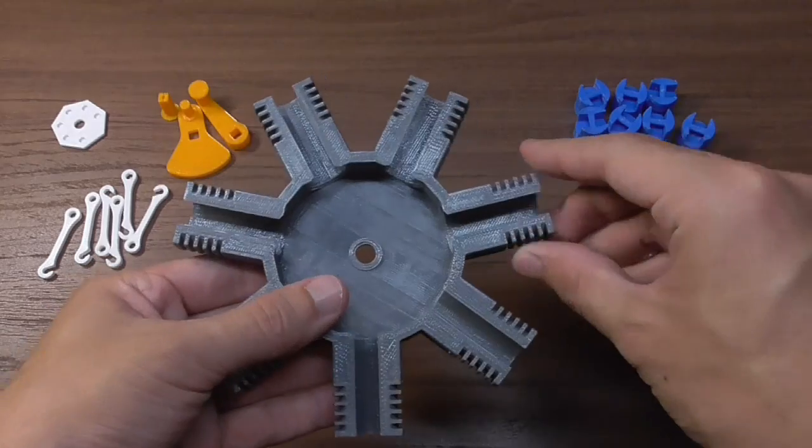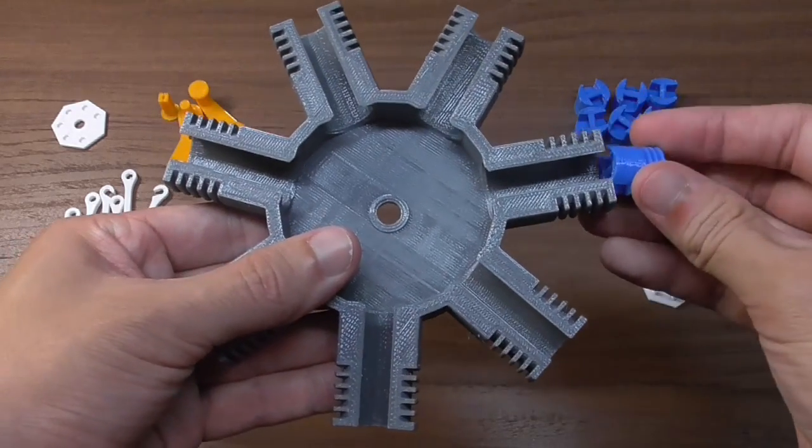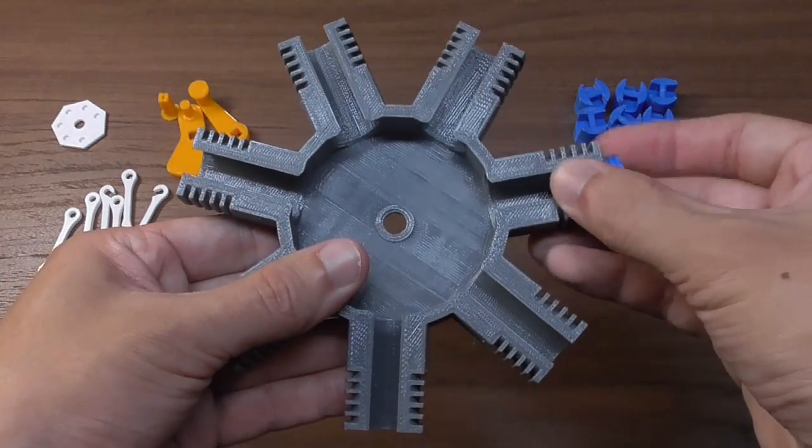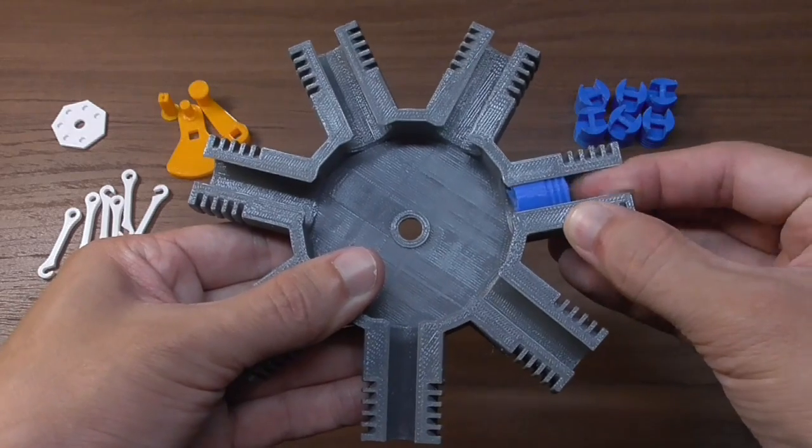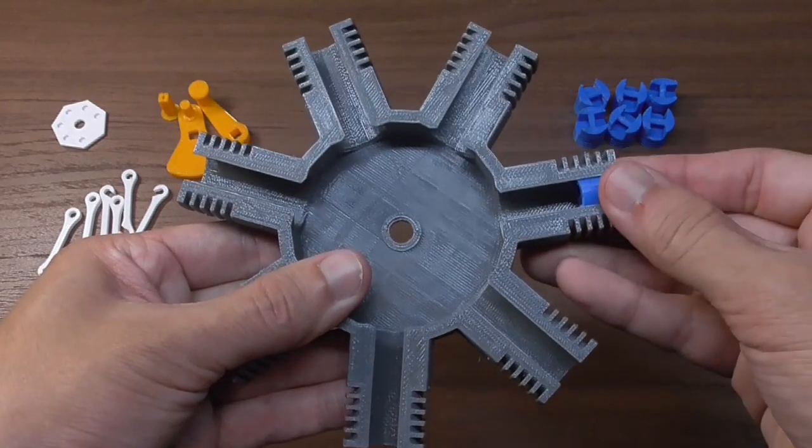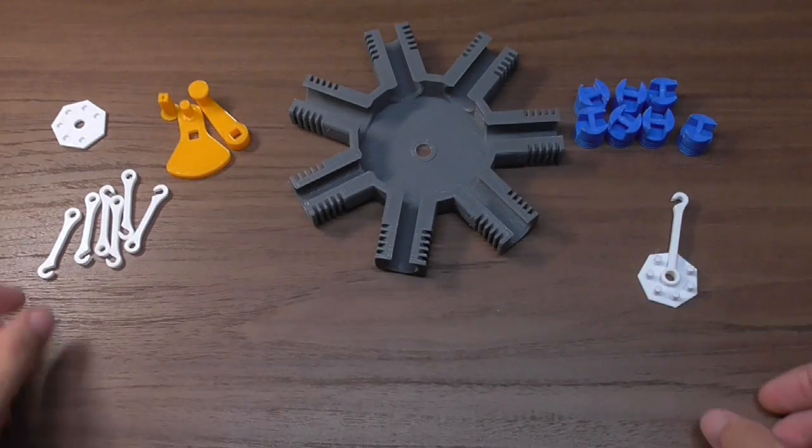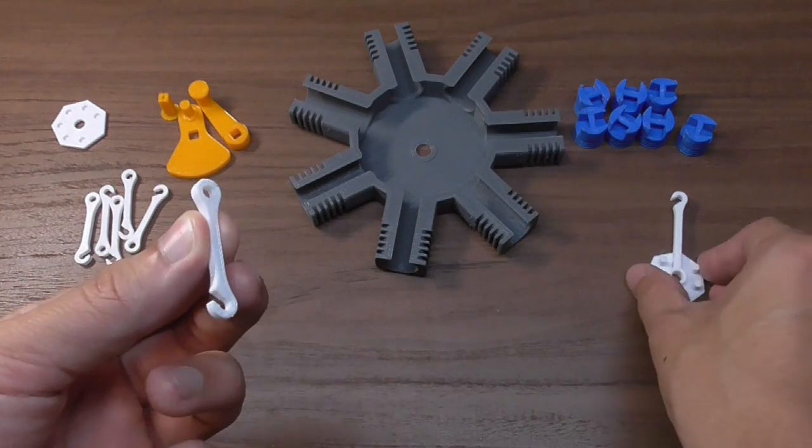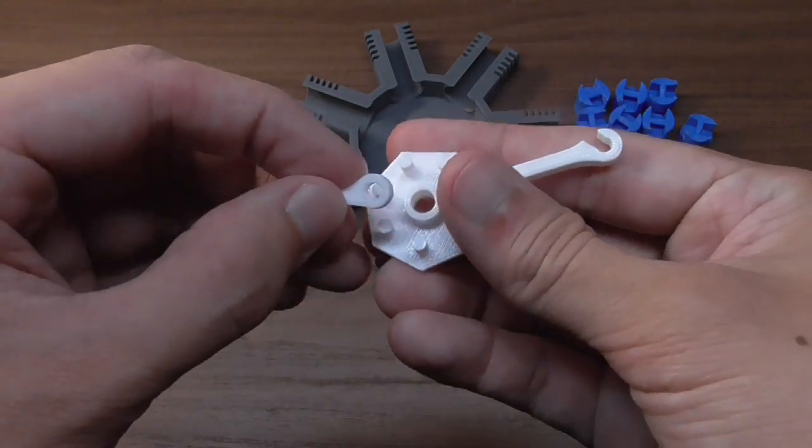Before assembly, you should make sure that the pistons move smoothly inside the cylinders. Also, you should make sure that the rod moves smoothly when attached on the hub.